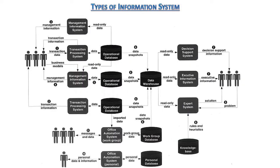In this diagram, we can see different types of information systems on the right side. On the left side, the management information system and transaction processing system. In the middle, we can see different types of databases that can be accessed from this system, like operational database, workgroup database, and personal database, as well as a knowledge base that can be accessed from the expert system.